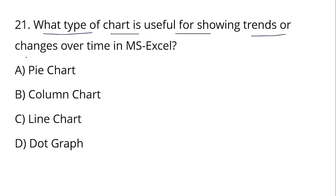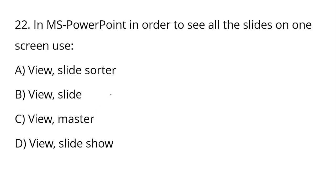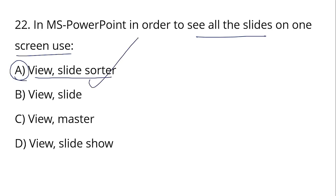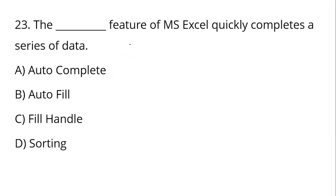Question number 21: What type of chart is useful for showing trends or changes over time in MS Excel? The answer is Option C — Line Chart. A Line Chart is best for showing trends over time. In MS PowerPoint, to see all slides on one screen, you go to Slide Sorter View.